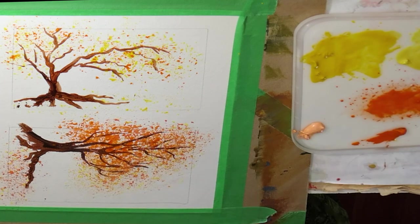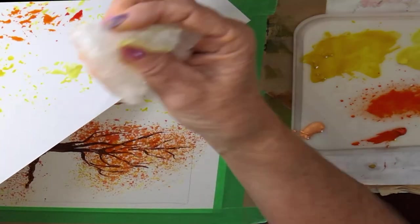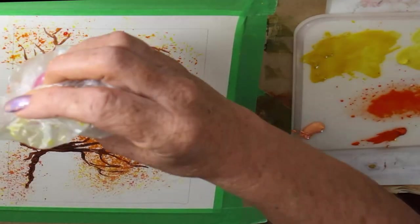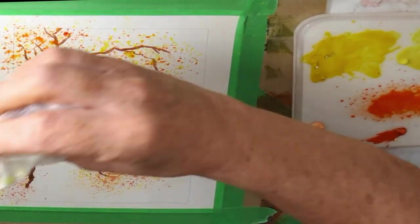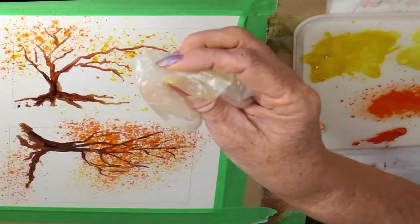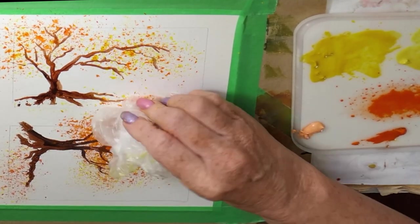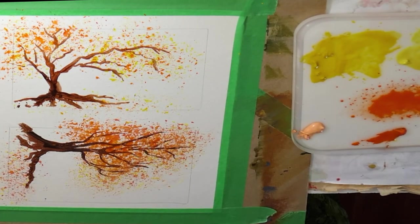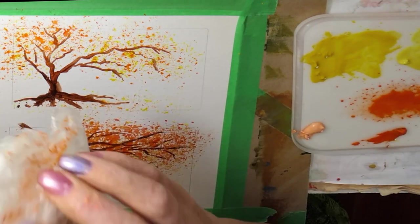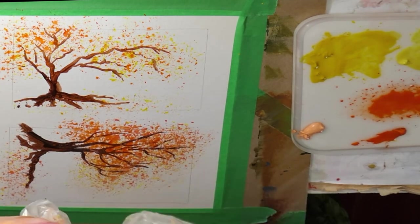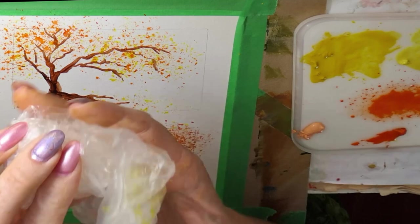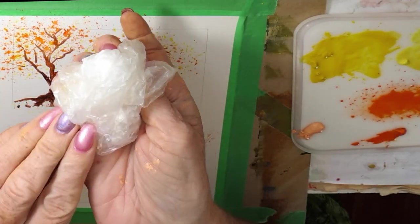And you can always pop it back in. Dab it a couple of times. So if you want bigger dots you just leave more paint on it. And if you want smaller dots you can take more paint off. So I'm going to turn that over again.